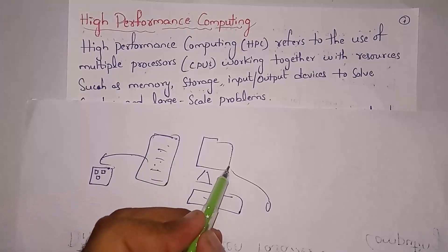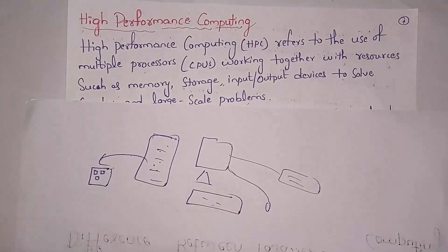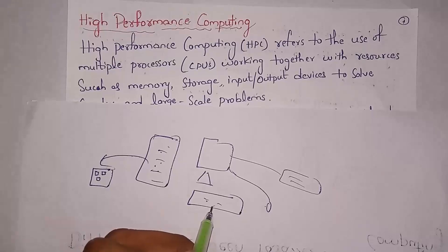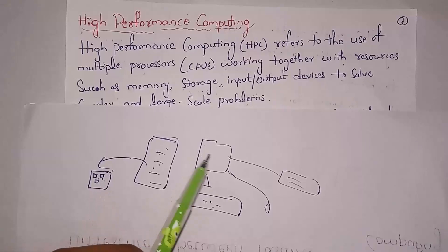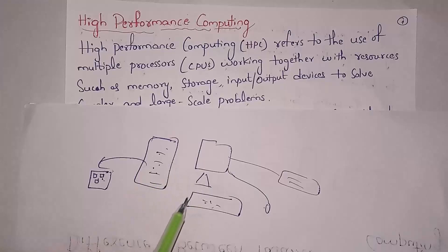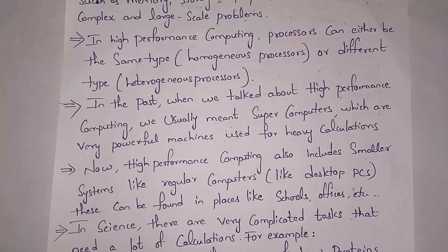The CPU also contains input and output devices like printer, keyboard, mouse, speakers, etc. By using all these resources we can solve complex problems. So in high performance computing we use multiple processors with resources like memory, storage, and input/output devices in order to solve large-scale problems.